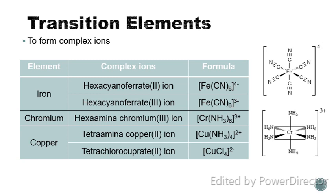The fourth characteristic of transition elements is that they form complex ions. For example, iron forms hexacyanoferrate(II) ion and hexacyanoferrate(III) ion. From the word 'hexa', hexa means 6, so the formula for these ions is quite complex — each has 6 cyanide ligands. These are the structural formulas for the complex ions. At SPM level, we can ignore the structural formula, but it is good to know how to draw it.